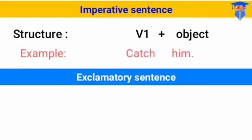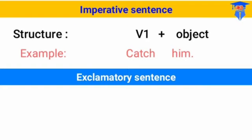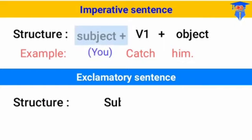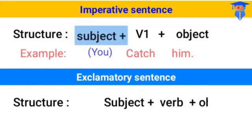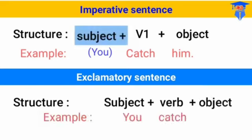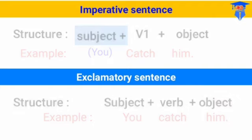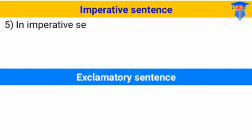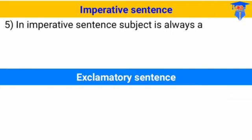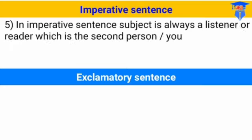For the formula: imperative sentence uses verb one plus object — 'Catch him!' — and 'you' is not mentioned. You should always remember not to use 'you' before the verb. For exclamatory sentence, it uses subject plus verb plus object — 'You catch him!' Itulah bedanya: kalimat perintah tidak dipakai subjeknya, tapi exclamatory sentence dipakai subjeknya.